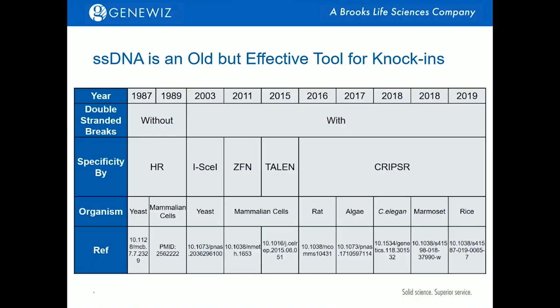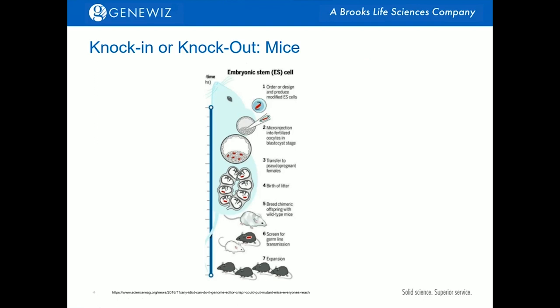I would like to emphasize that using ssDNA as a knock-in template is not entirely a new trick. It's intuitive to come up with this idea, as single-strand DNA contains as much genetic information as double-strand DNA. Therefore, in the 1980s, before we could freely generate targeted double-strand breaks in eukaryotic cells, there were several initiatives to test single-strand DNA versus double-strand DNA in terms of knock-in efficiency, and the results were promising. With the development of zinc finger, TALEN, and CRISPR, single-strand DNA has been used in many organisms, from algae and C. elegans to mouse and even non-human primates.